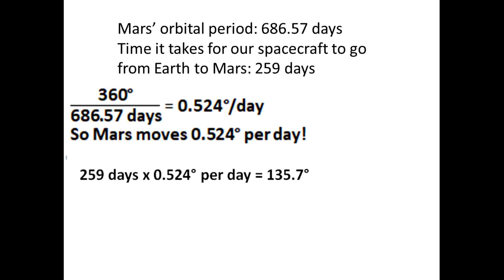From what we just calculated earlier, the time that it takes for our spacecraft to go from Earth to Mars is 259 days. So if I multiply that time period by 0.524 degrees, then that gives me 135.7 degrees.